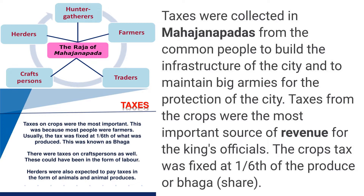Point number two: craftspeople. Tax was collected from them. Different crafts activities were available — cobbler, carpenter, painter, blacksmith, goldsmith — so the kings or Raja collected taxes from them. Point number three: herders. How many animals you had, according to that the tax was collected.